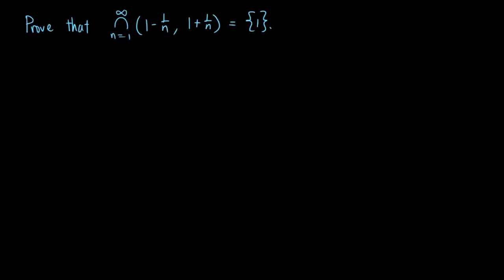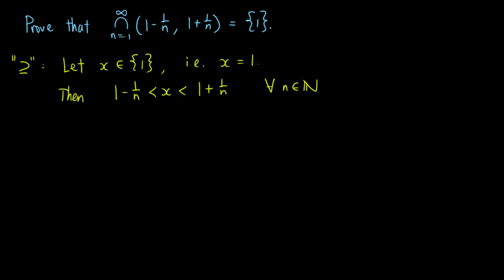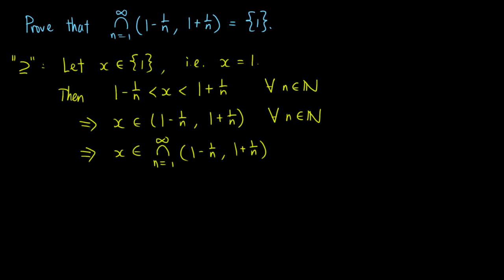Now, let's look at a proof involving infinite intersection. We want to show that the infinite intersection of the open intervals (1 - 1/n, 1 + 1/n) is the set containing just 1. Let's do the easier direction first: that the set {1} is a subset of the infinite intersection. So let x be an element of the set {1}, that is, x equals 1. Then 1 - 1/n is less than x is less than 1 + 1/n for all positive integers n. This implies that x is in the interval (1 - 1/n, 1 + 1/n) for all positive integers n, meaning x is in the infinite intersection. Hence, the infinite intersection contains the set {1}.